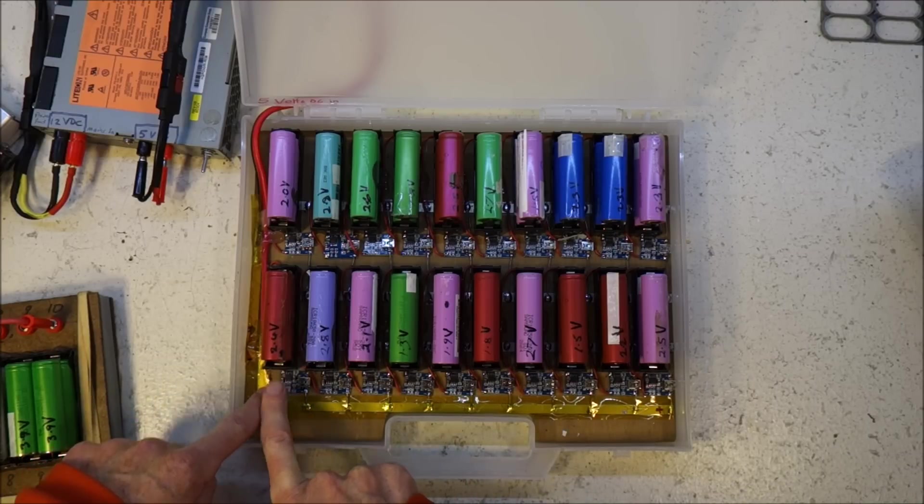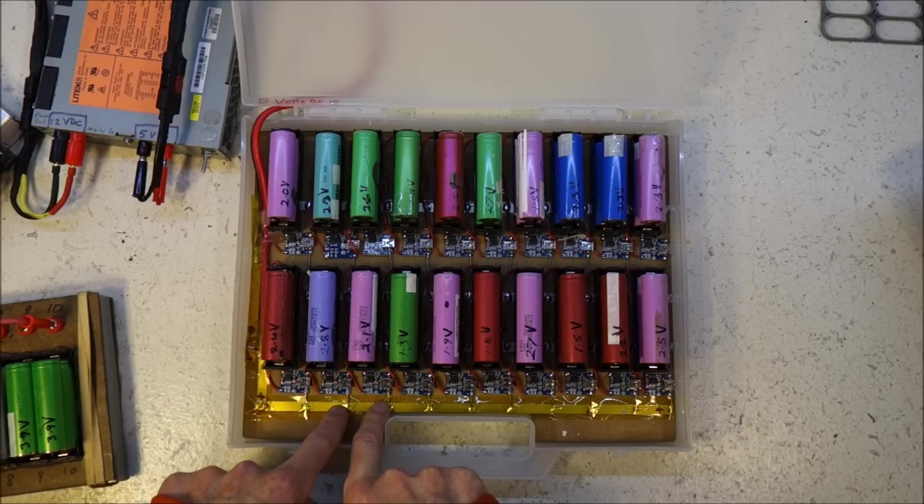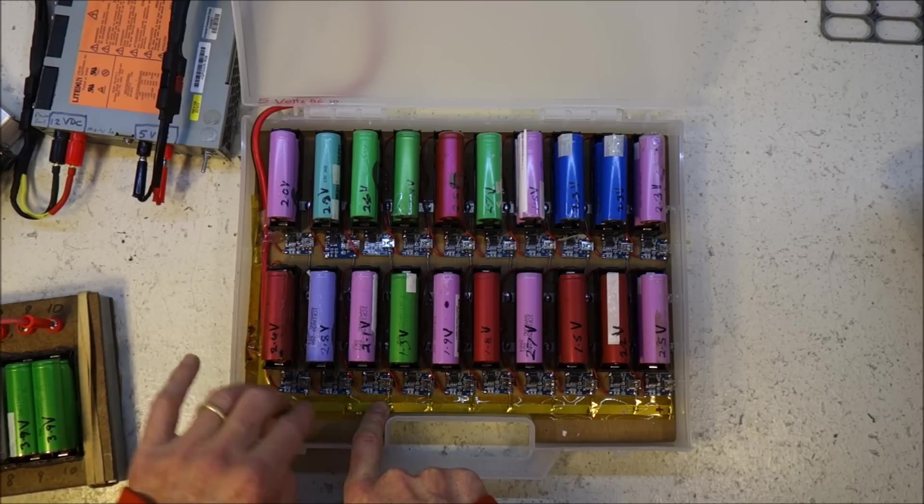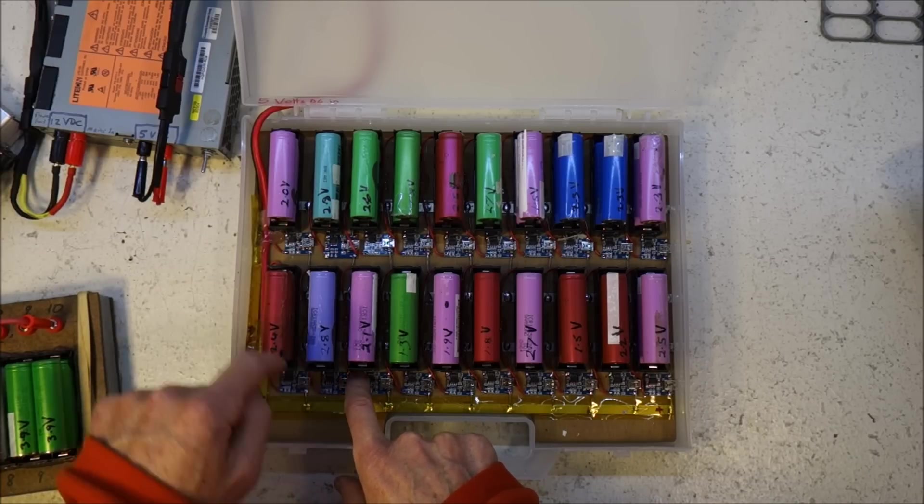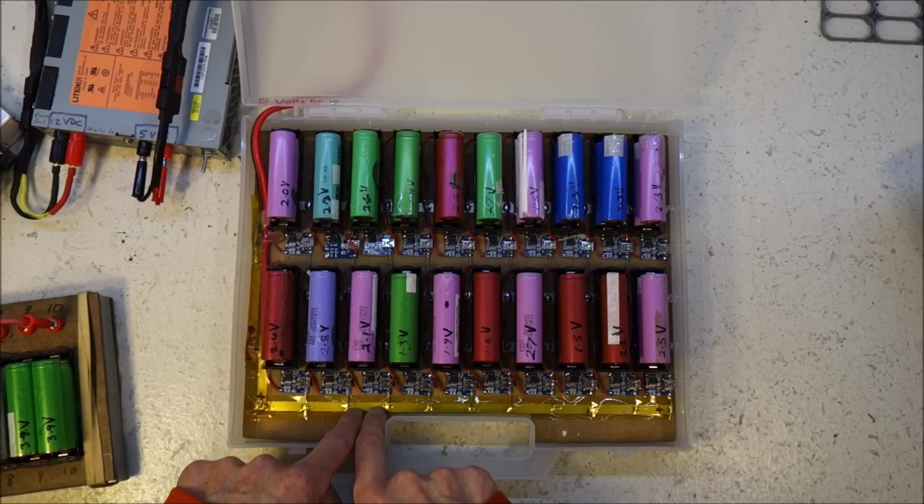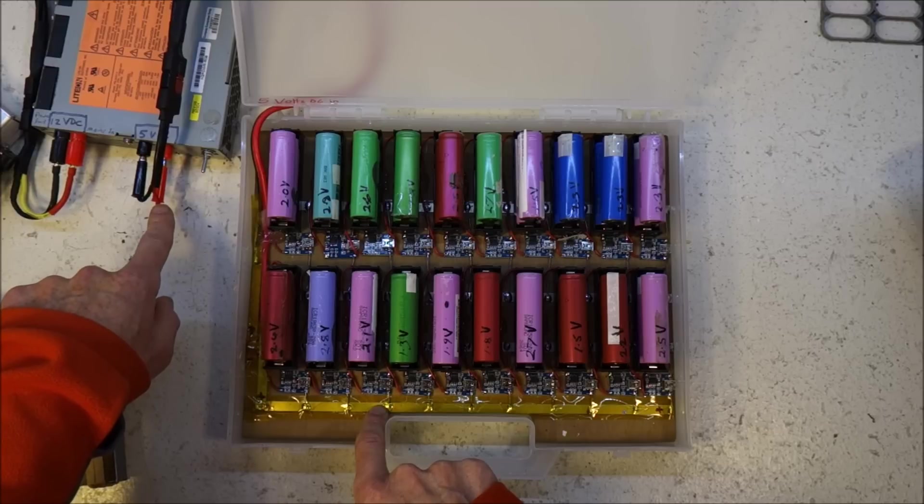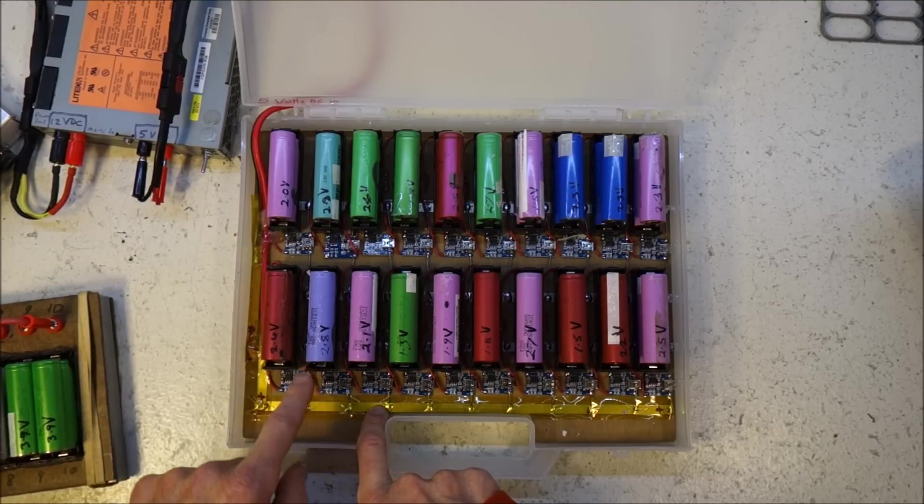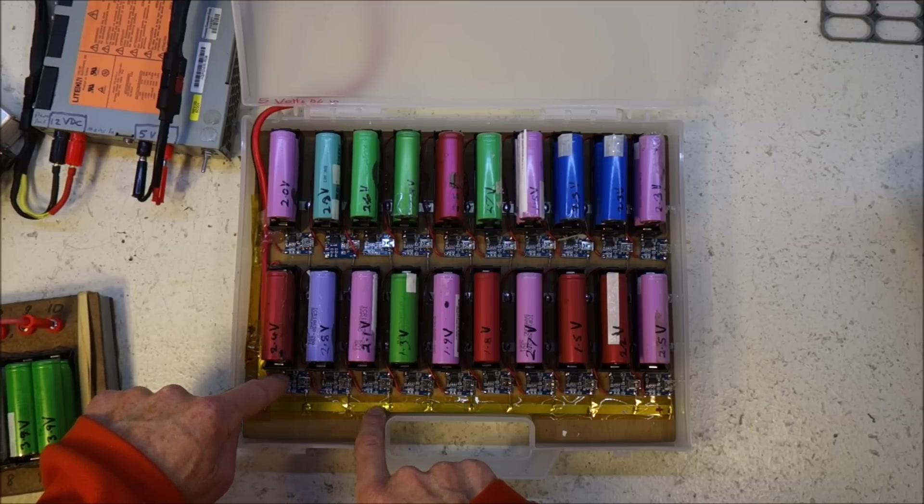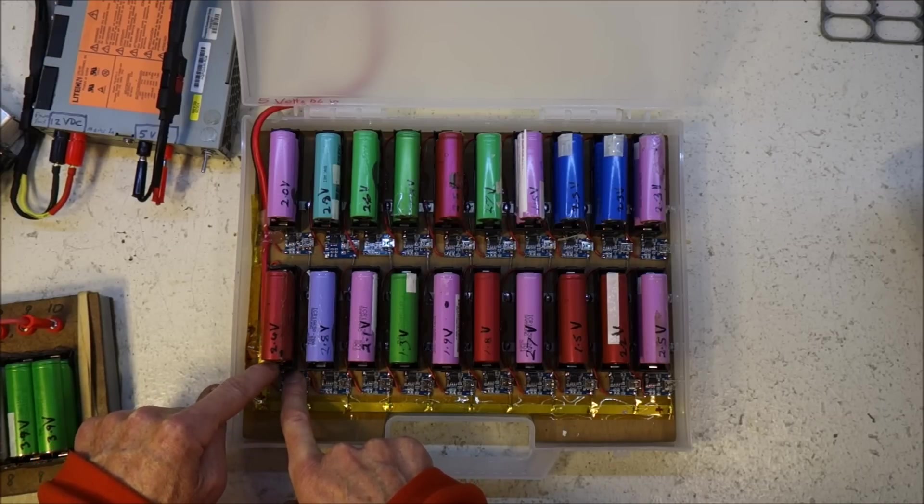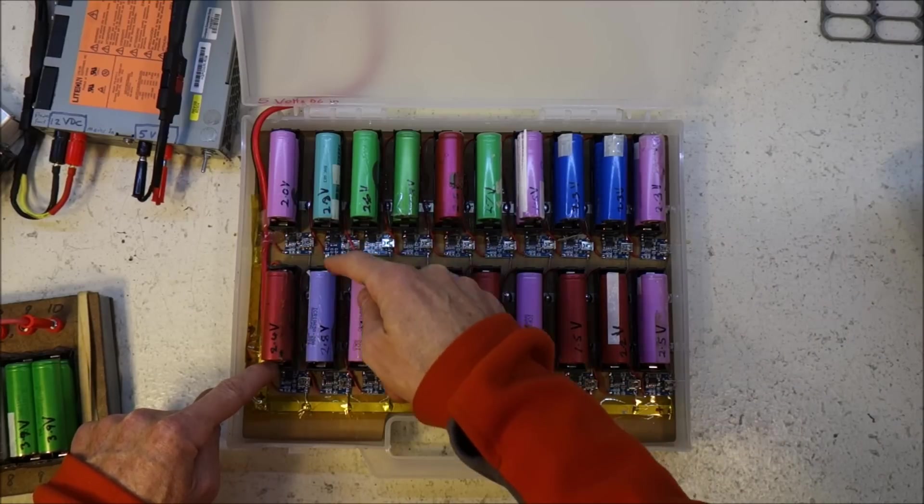If you've got three of these powered from the same power supply, so you've got the negatives all wired to the negative of your power supply and you've got the positives all connected together, connected to the positive on your power supply, then because the negative of the module is connected to the negative of the battery...